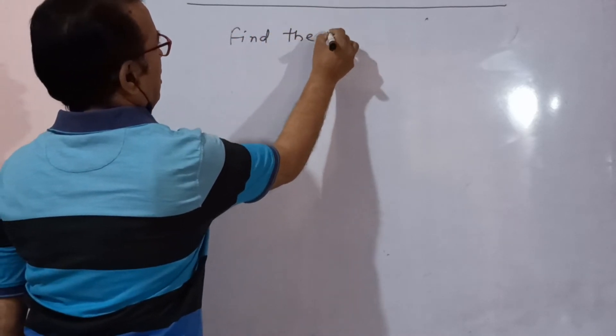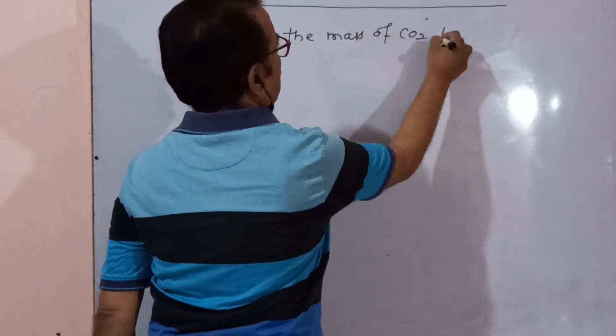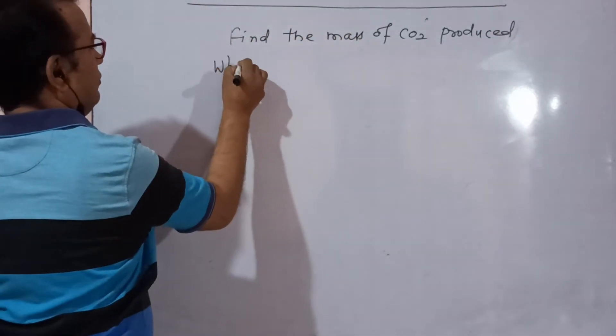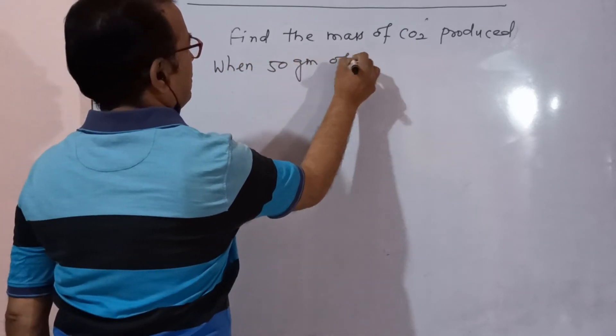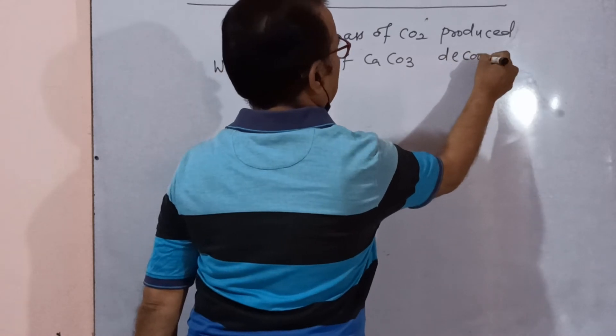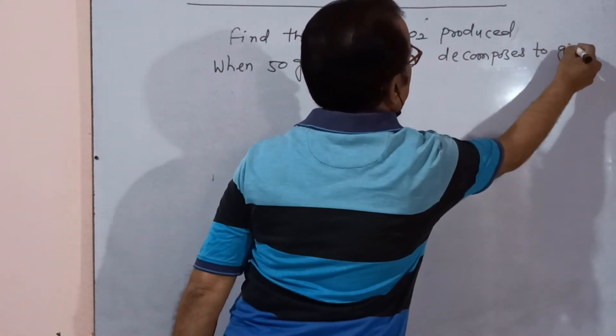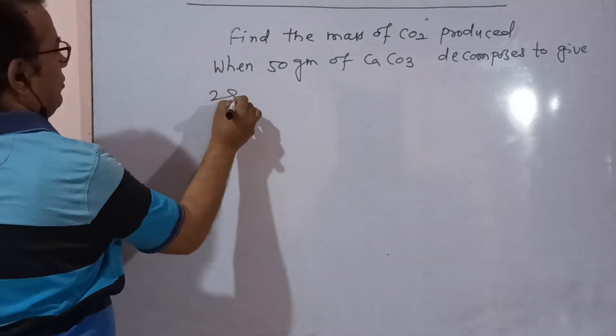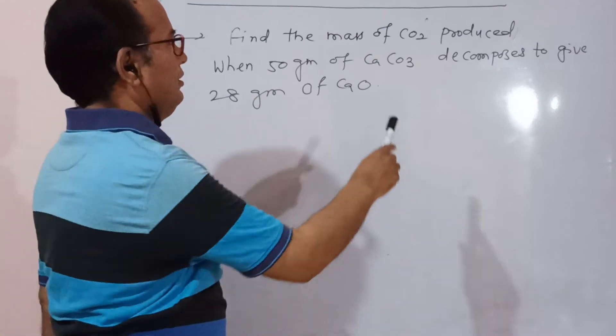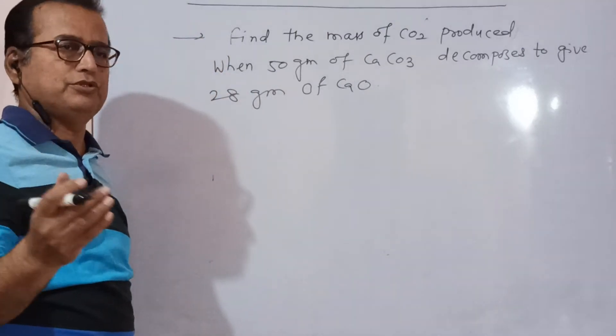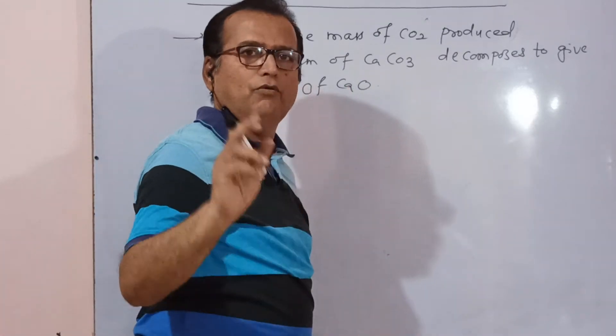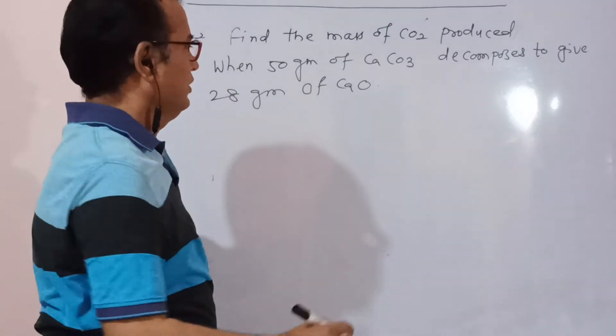Find the mass of CO2 produced when 50 gram of CaCO3 decomposes to give 28 gram of CaO. This is a question. After decomposition of CaCO3, after decomposition means after heating of CaCO3, the products are CaO and CO2. One of the products is CaO, one of the products is CO2. Two products are given.